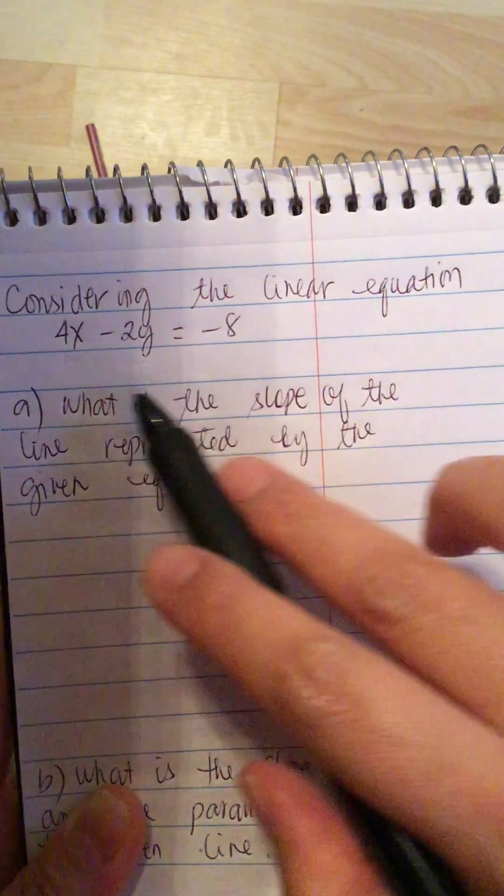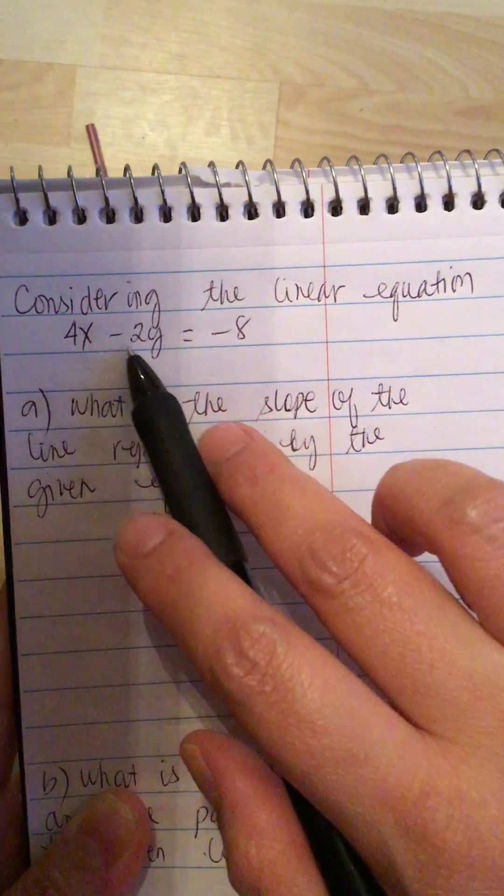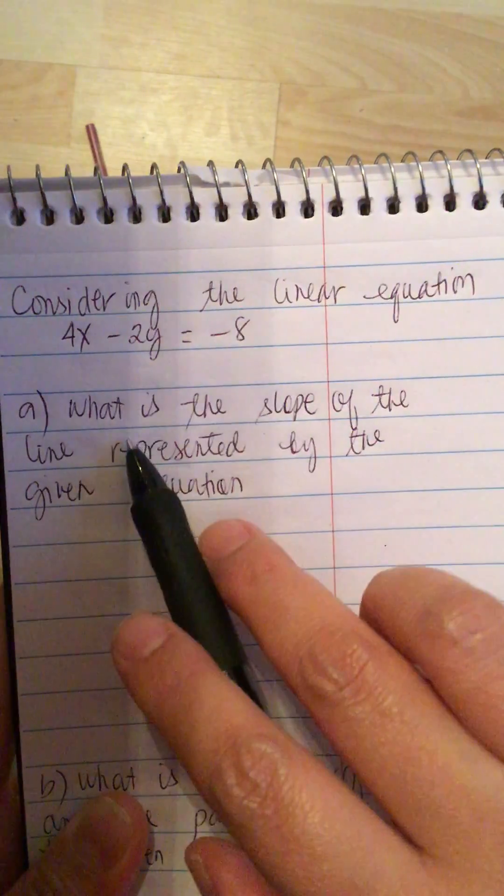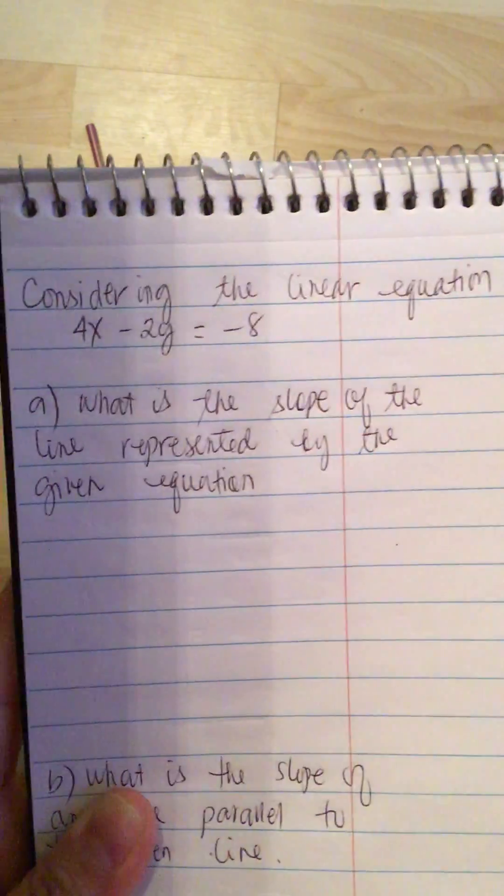Considering the linear equation 4x minus 2y is equal to negative 8, what is the slope of the line represented by the given equation?